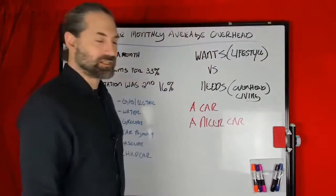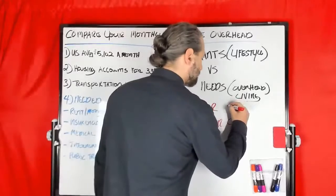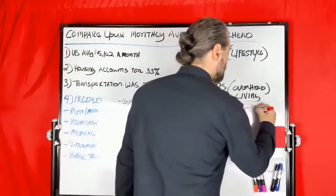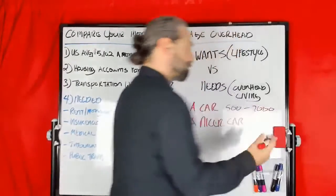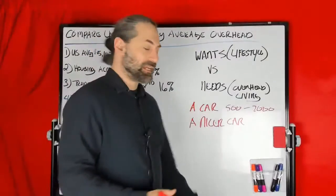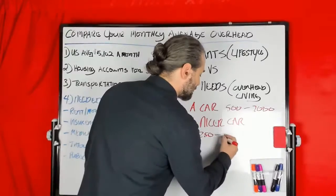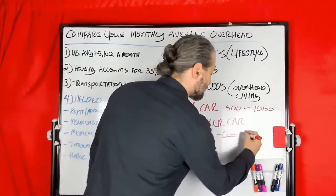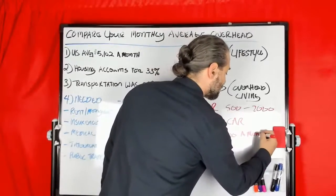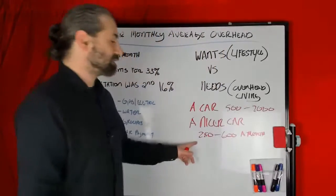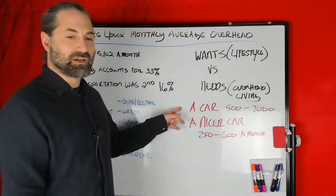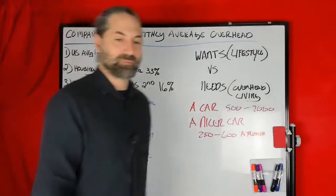A car, you can end up finding for anywhere from $500 to $2,000. That could be a one-time fee, and then you pay for the upkeep. A nicer car will cost you anywhere from $250 to $600 a month. Now, what's the difference here? Well, this is a lease or a car payment. This is, I'm just buying a car so I get to point A to point B.